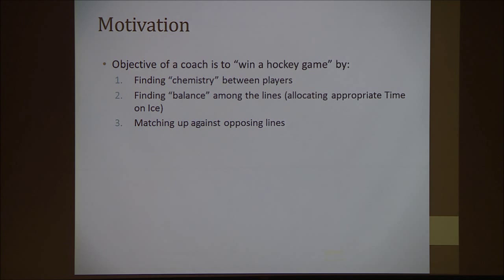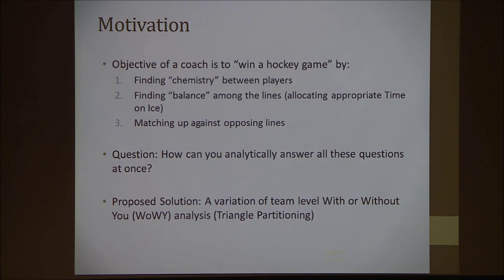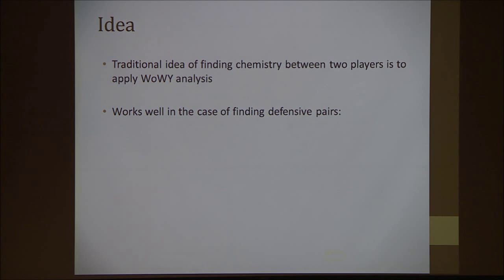I wanted to know if there was a way we can answer all these questions analytically. My proposed idea is a variation of with-or-without-you statistics, and I'm just calling it Triangle Partitioning. The traditional idea of finding chemistry between two players — you can see if two players go together well depending on how well they play together or without each other. It works well for finding defensive pairings, because for each defensive line there are only two players, and you can compare all six-choose-two, or 15, defensive pairings.